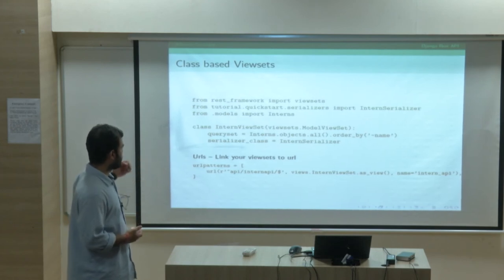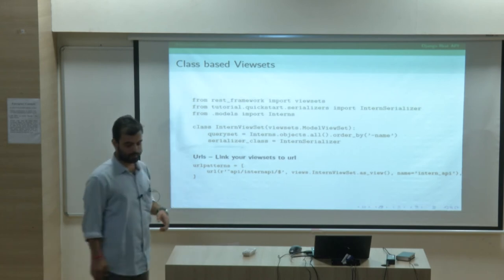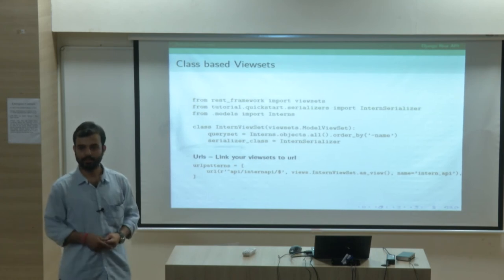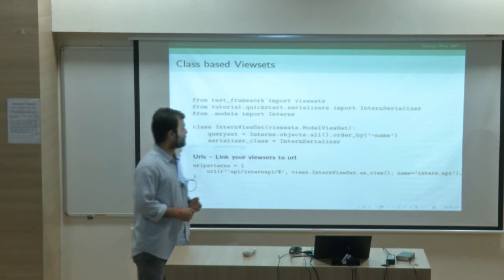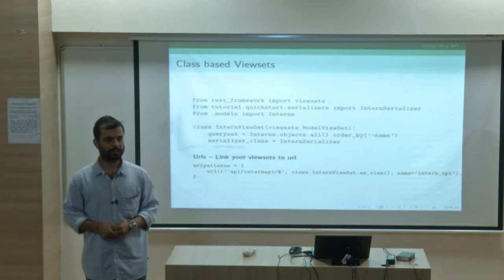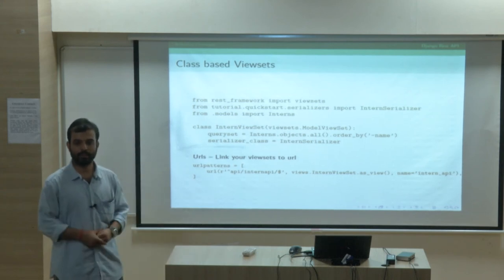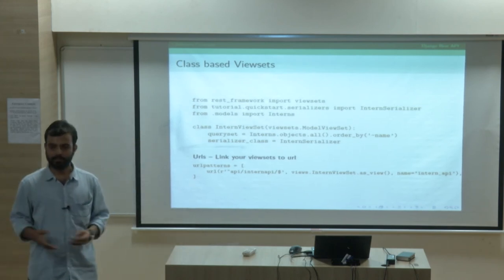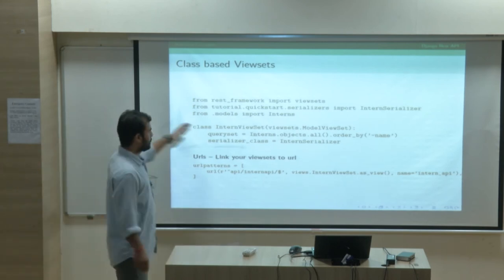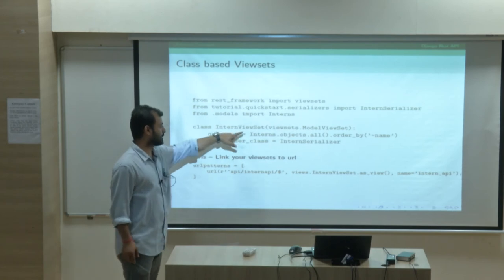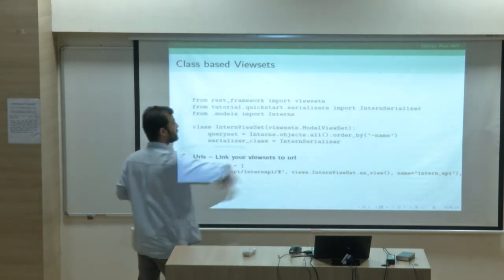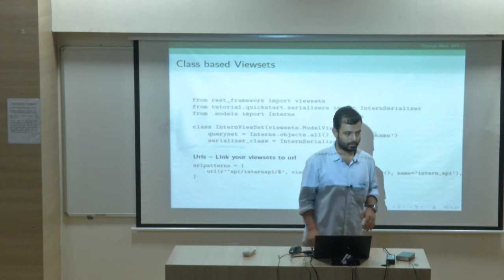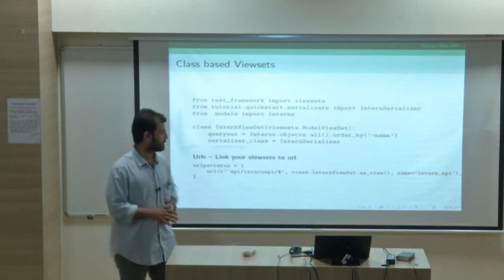You create a serializer, create a ViewSet function — in basic Django you call it views, in REST APIs you call it ViewSets. Where do you write your APIs? You can write with your Django functions but that messes up all the code. You can create a separate file in each app — I call it viewsets.py — and write all your ViewSets there. For example, this is the intern ViewSet: it is a model serializer that will give all the interns.